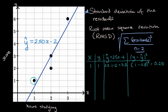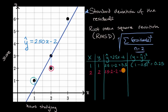Next, we have the data point (2, 2). Our estimate from the regression line when x equals two is 2.5 times two minus two, which equals three. So our residual squared is (2 minus 3)², which is negative one squared, which equals one.